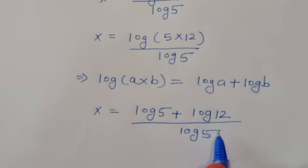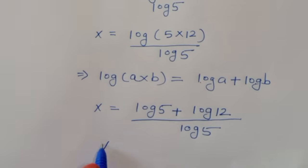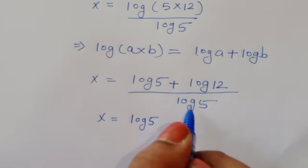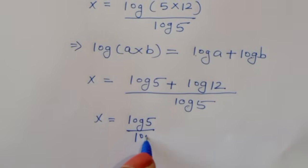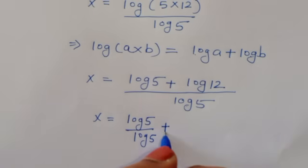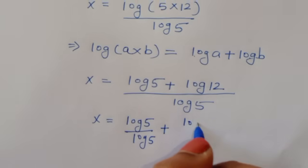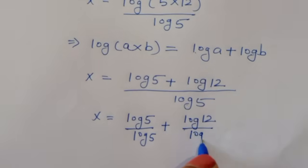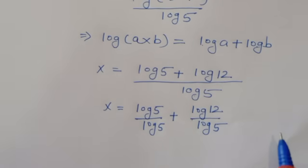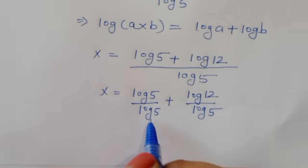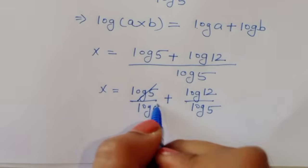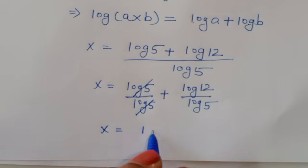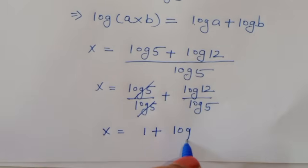Now separating the terms, x is equal to log of 5 divided by log of 5, plus log of 12 divided by log of 5. Log of 5 divided by log of 5 cancels to give 1, so x is equal to 1 plus log of 12 divided by log of 5.